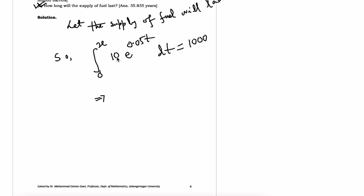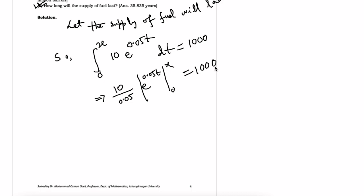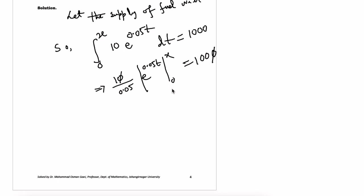We can solve this integral equation to get x. Like before, the integration gives 10 divided by 0.05 times e to the power 0.05t evaluated from 0 to x, equal to 1000. Dividing both sides by 10, we get: e to the power 0.05x minus e to the power 0 equals 100 times 0.05.